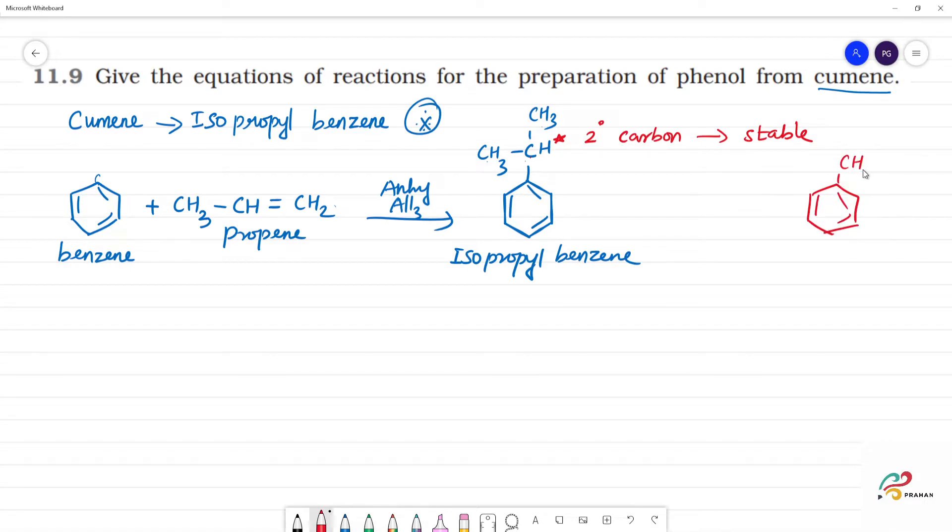We can see how the carbocation is formed. In another case, CH2-CH2-CH3 forms, so n-propylbenzene is formed. Stability is attained for the carbocation through hydride shift.